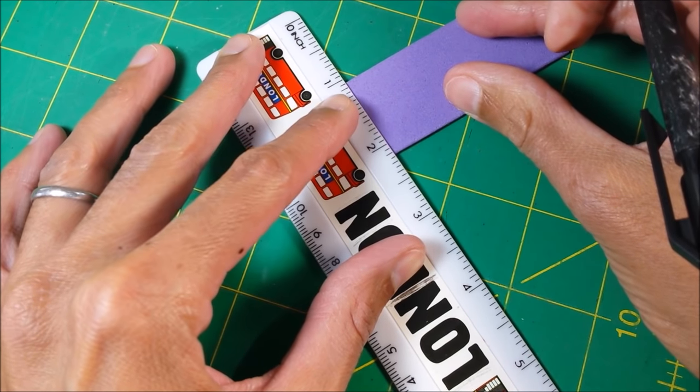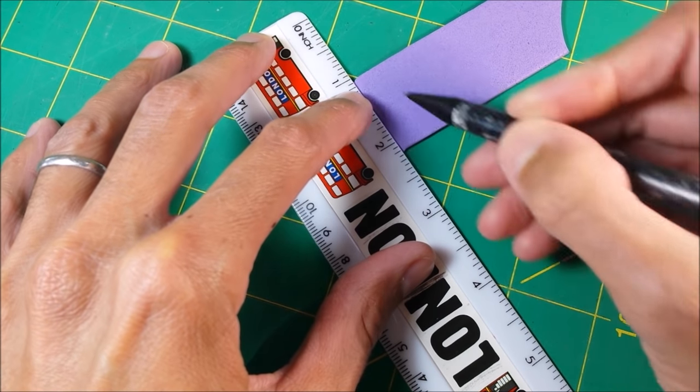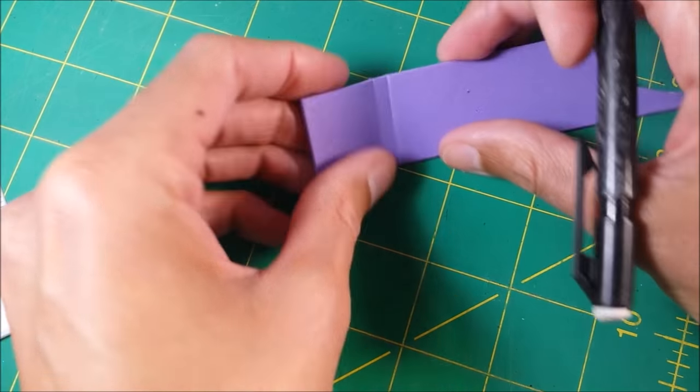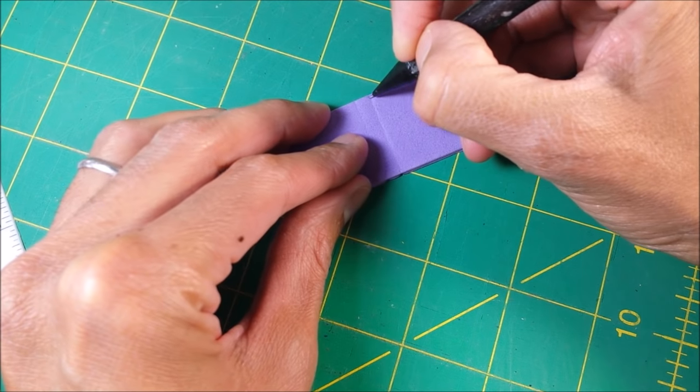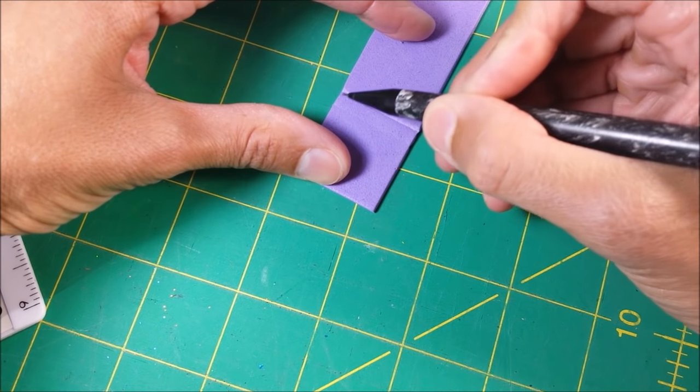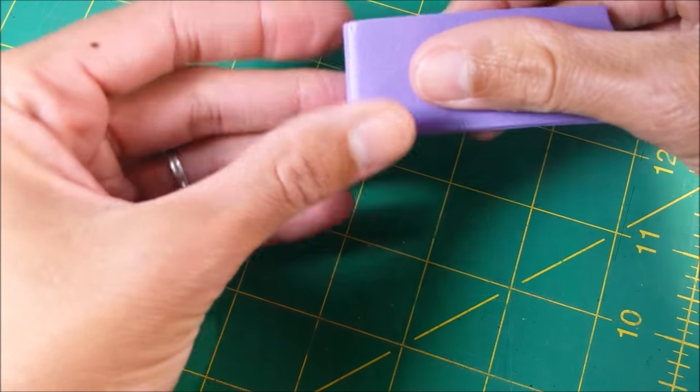I score it, and then just scooting it over just a little bit, I score it again. Flip it over and score the other side. You want your craft foam paper to move pretty well, so you may need to do this a few times.